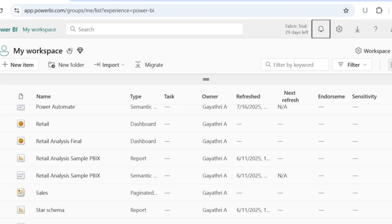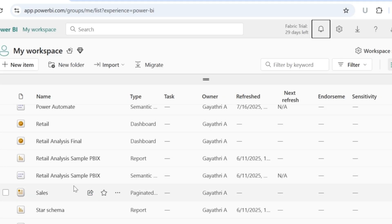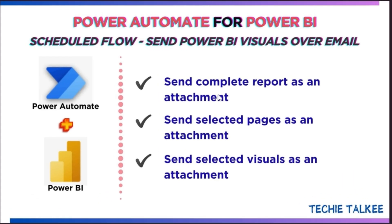For this video I'm going to consider the sample report from Microsoft which is the retail analysis sample PBIX file. I already have it published to Power BI service. In this video we are going to look at three scenarios: one is sending the complete report as an attachment, the second scenario is sending only the selected pages in that report as an attachment, and the third scenario is sending only the selected visuals as an attachment.